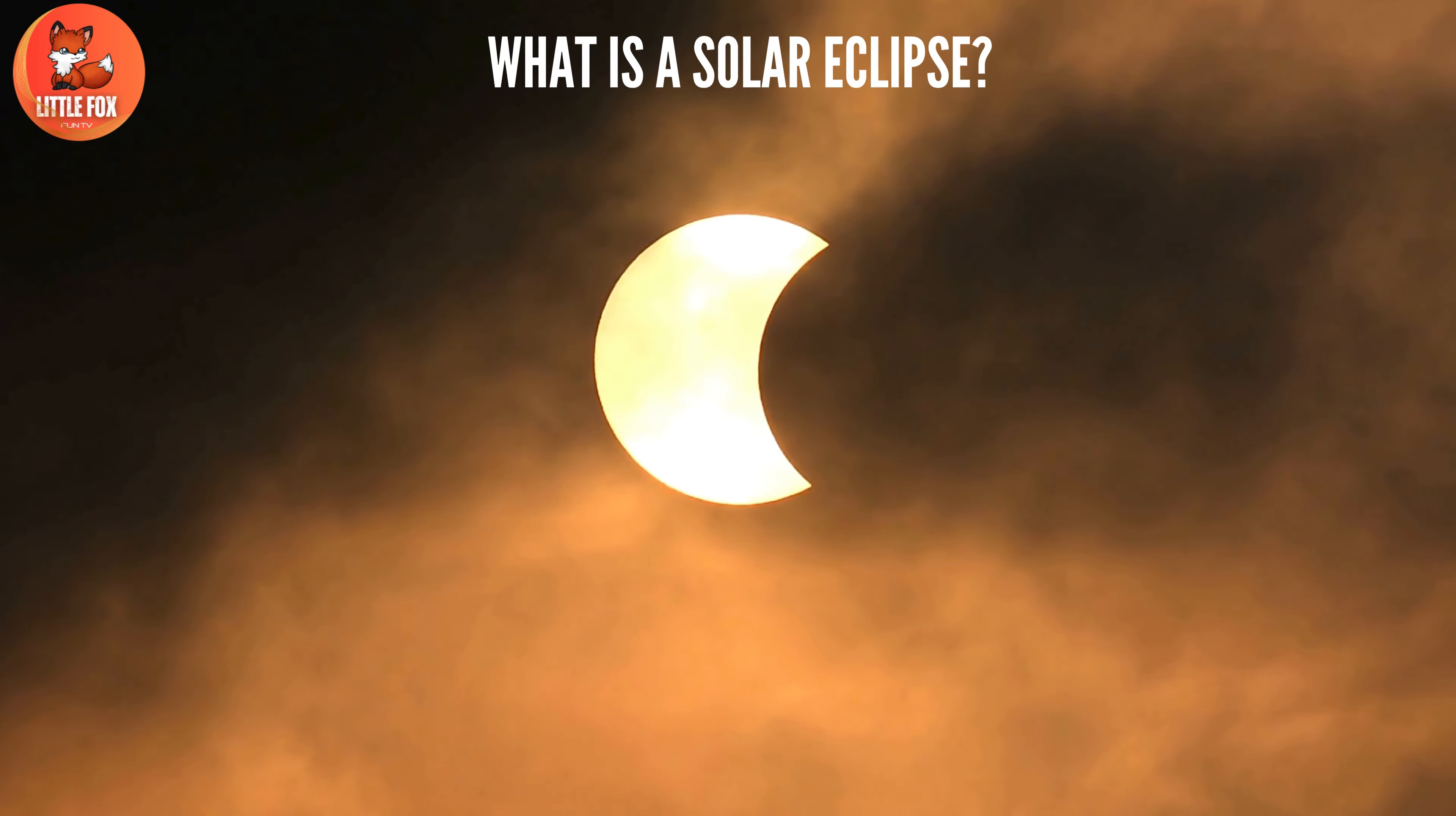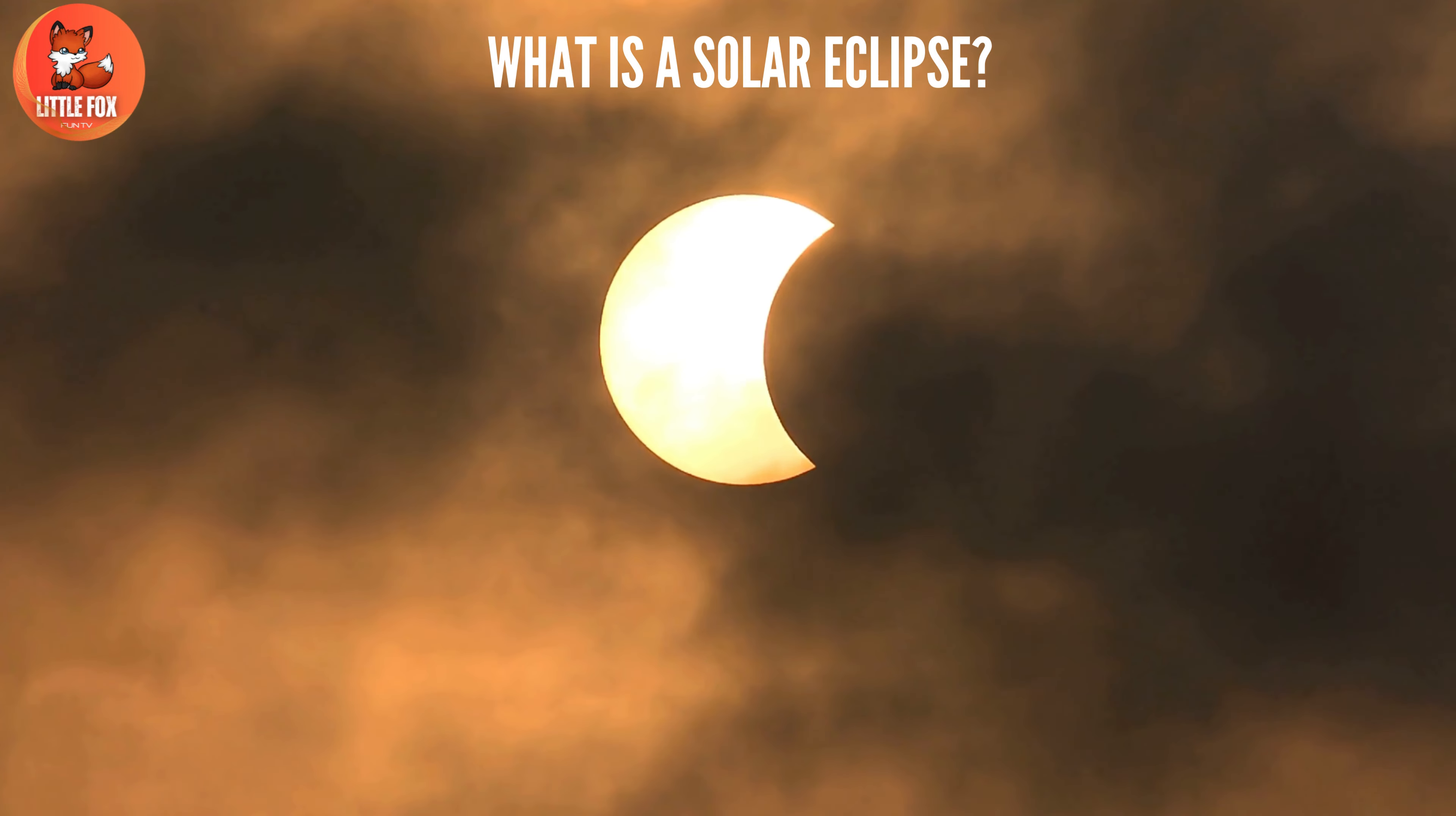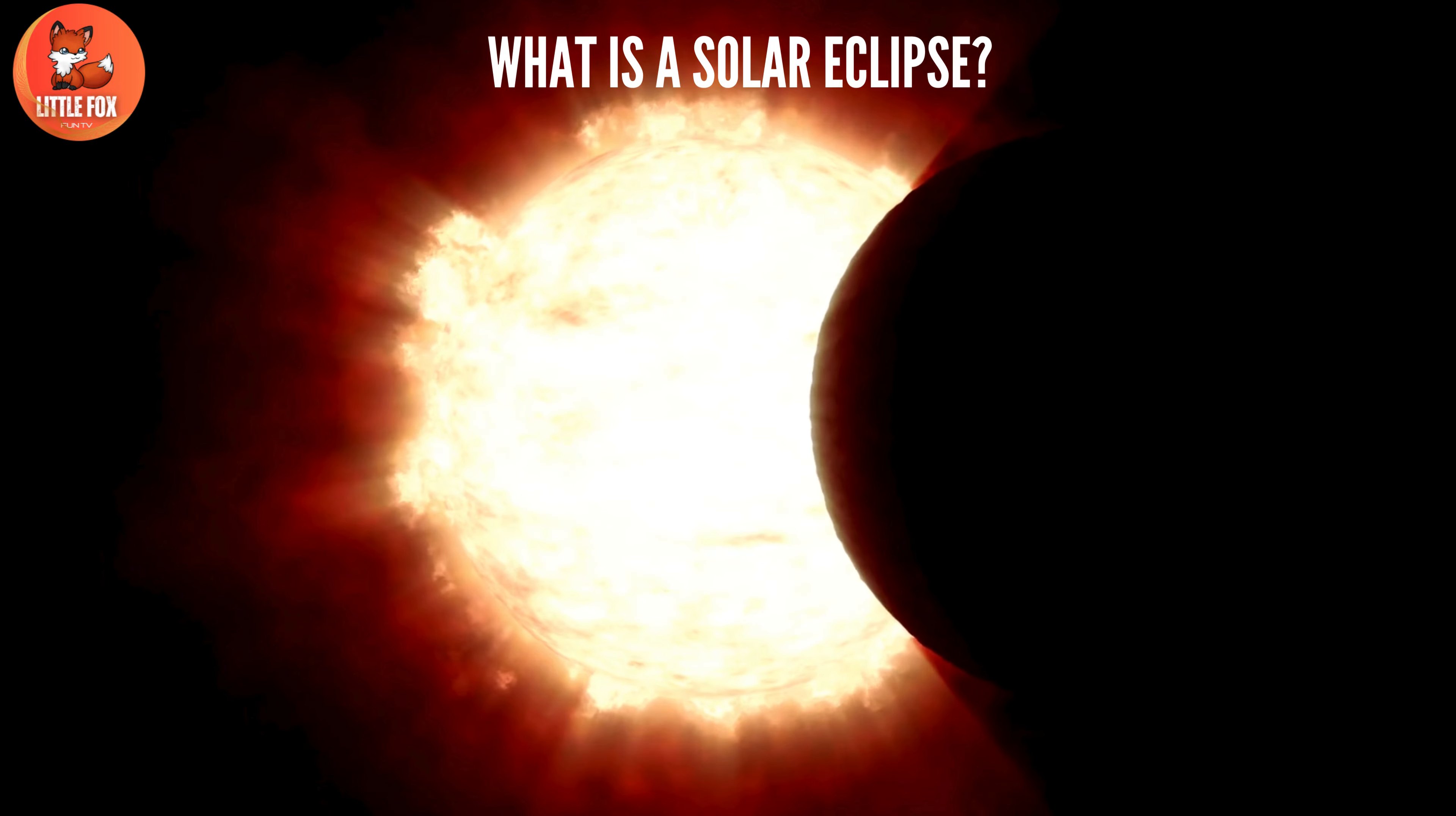But fear not, fellow explorers. While it might baffle some, this total darkness is like a VIP pass for scientists studying the sun's super cool aura called the corona. Normally, it's a shy little thing, hiding behind the sun's brightness. But during an eclipse, bam, it's the star of the show.